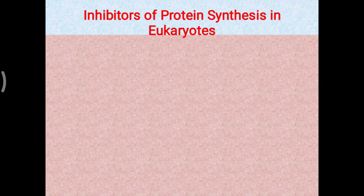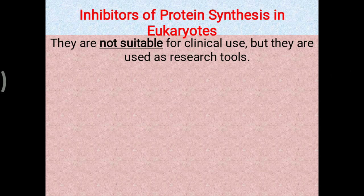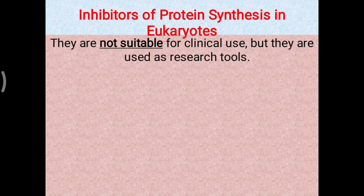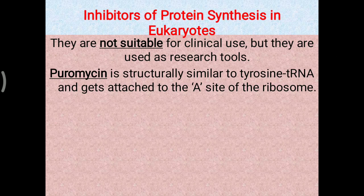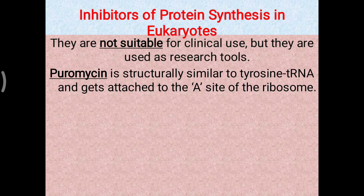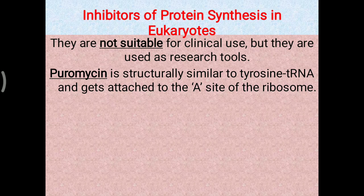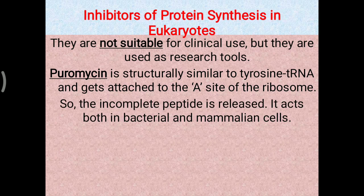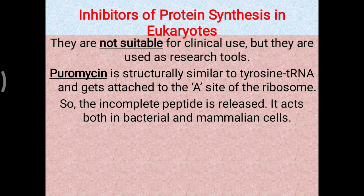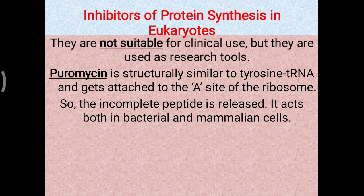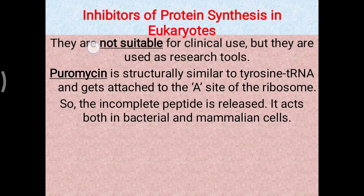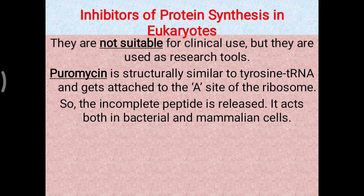Inhibitors of protein synthesis in eukaryotic cells are most interesting — they are not suitable for clinical practice but are used as research tools. Puromycin is structurally similar to tyrosyl-tRNA and gets attached to the A site of the ribosome, causing the incomplete peptide to be released. It acts both in bacterial and mammalian cells, so these molecules are generally used only as research tools and not suitable for clinical practice.